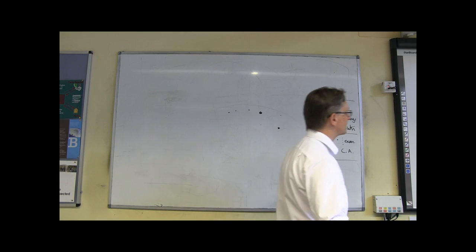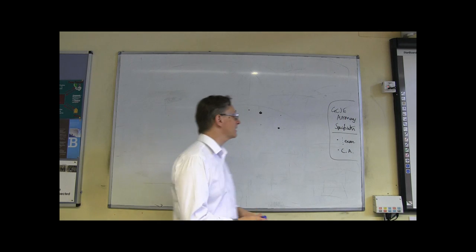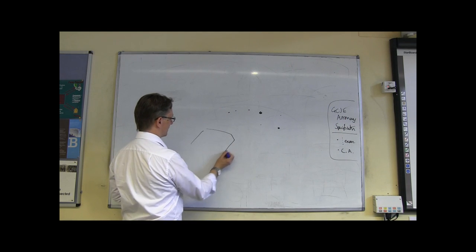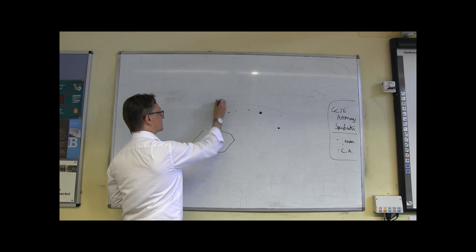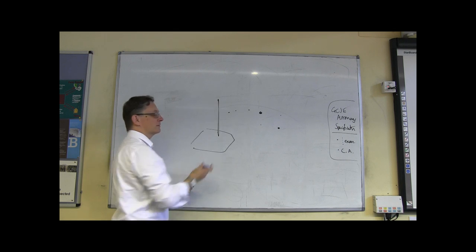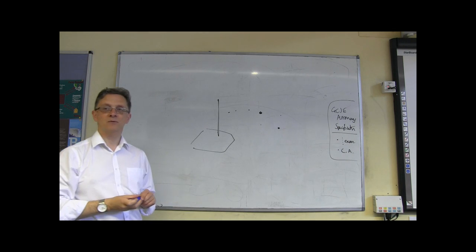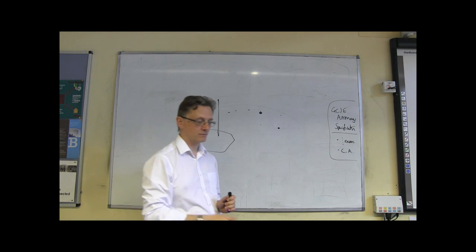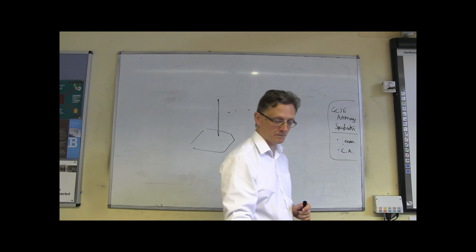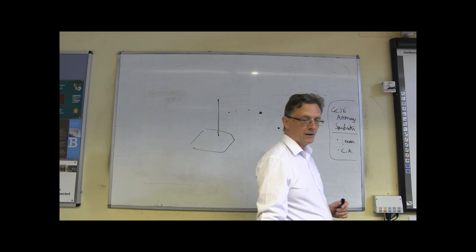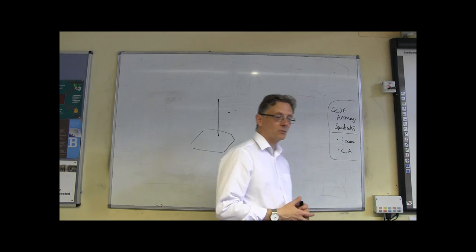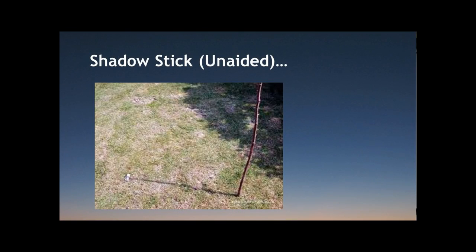What do you have to do? As you can see from the slide there, you have to go outside and put a stick in the ground. Stop if I'm going too quickly. Now, the stick, as you can see there, will produce a shadow.